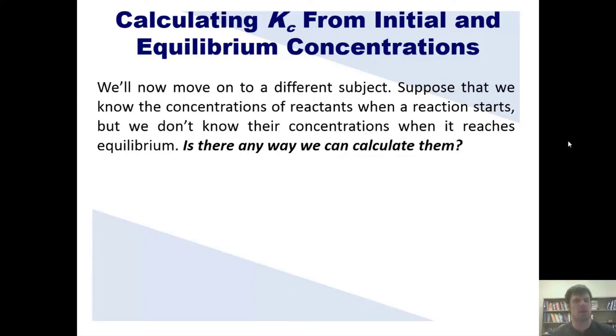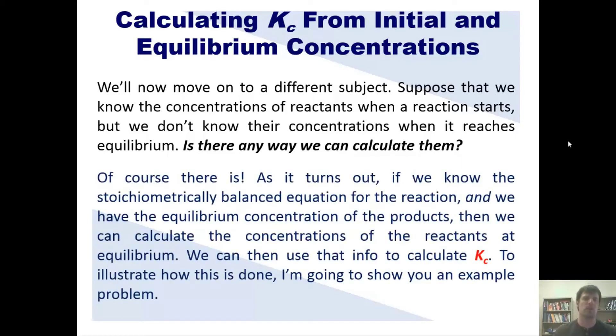We'll now move on to a different subject. I want you to suppose that we know the concentrations of reactants when a reaction starts, but we don't know their concentrations when it reaches equilibrium. Is there any way that we can calculate them? The answer, of course, is yes. As it turns out, if we know the stoichiometrically balanced equation for the reaction, and we have the equilibrium concentration of the products, then we can calculate the concentrations of the reactants at equilibrium. We can then use this info to calculate Kc.